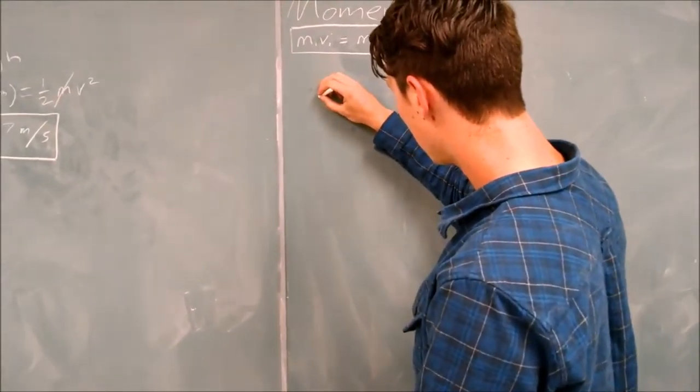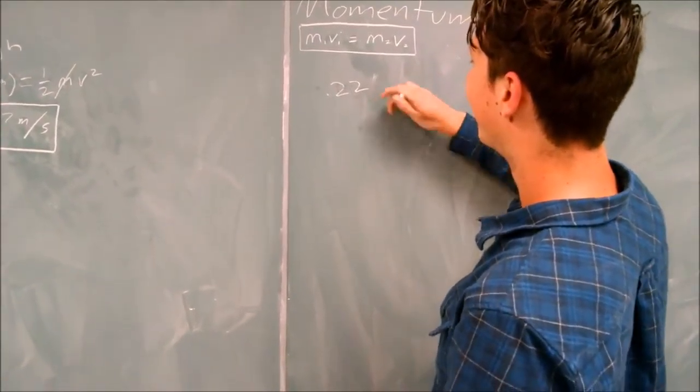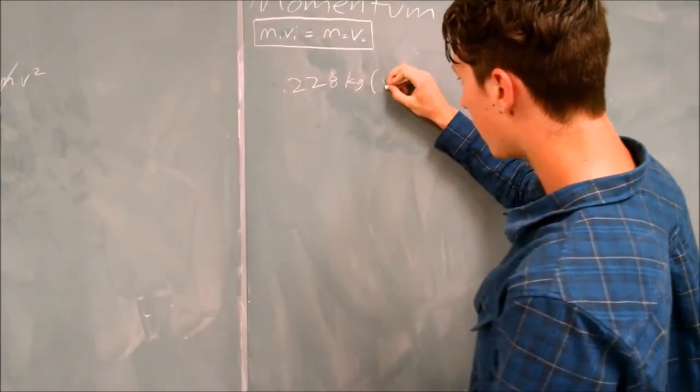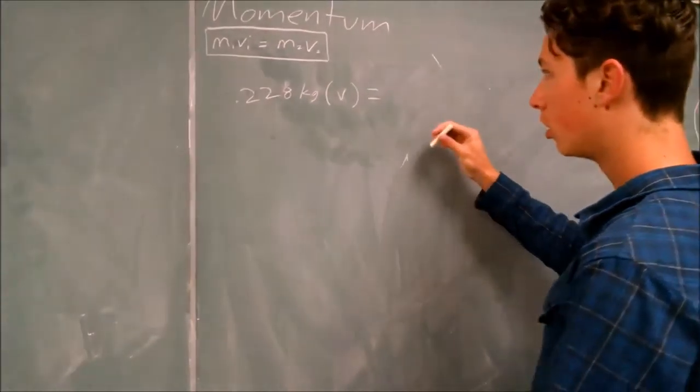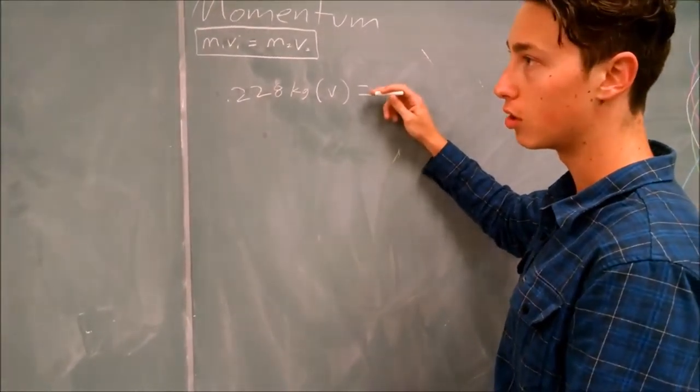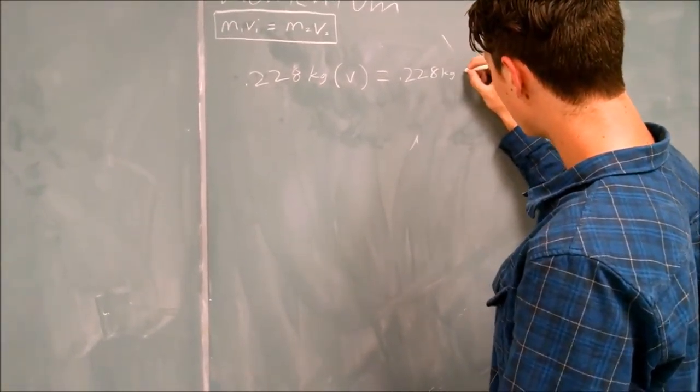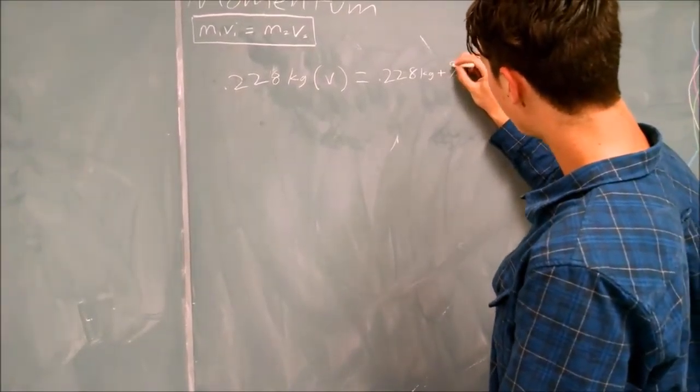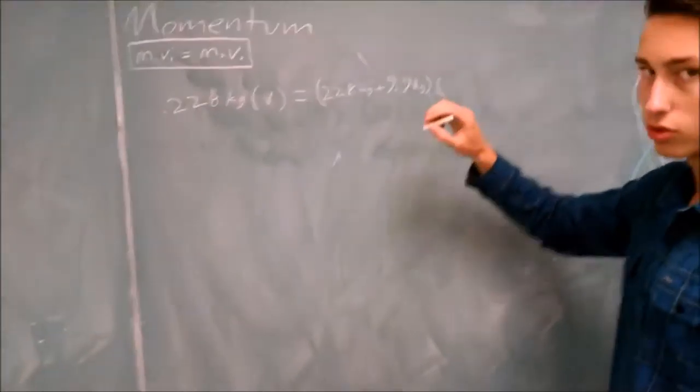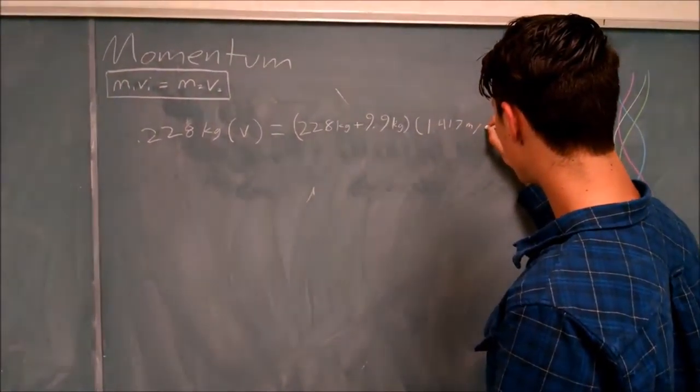the mass of the potato is 0.228 kilograms times its velocity, that would be the momentum, equals the mass and the velocity of the system after the collision. The mass of the system is going to be the potato plus the target, so we're going to get 0.228 kilograms plus 9.9 kilograms, all times the final velocity, which we just solved for, which is 1.417 meters per second.